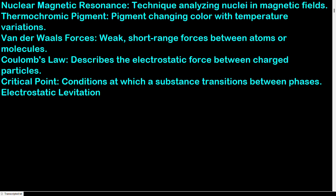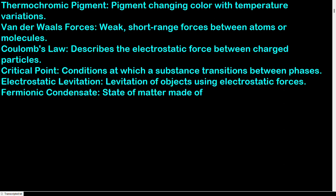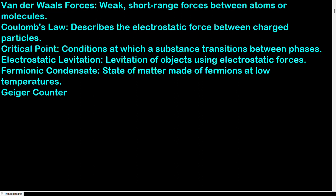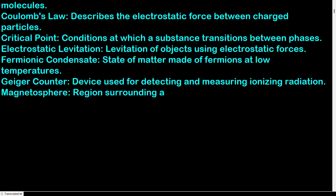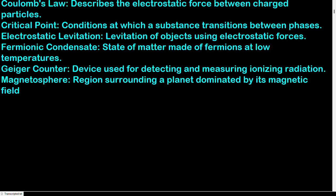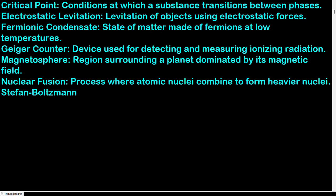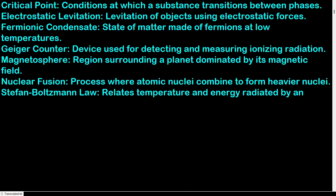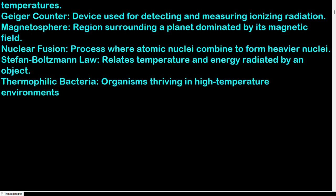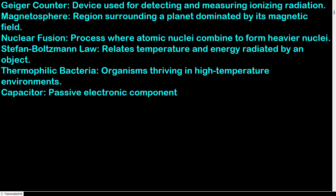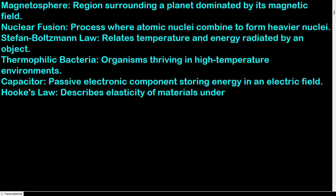Electrostatic levitation: levitation of objects using electrostatic forces. Fermionic condensate: state of matter made of fermions at low temperatures. Geiger counter: device used for detecting and measuring ionizing radiation. Magnetosphere: region surrounding a planet dominated by its magnetic field. Nuclear fusion: process where atomic nuclei combine to form heavier nuclei. Stefan-Boltzmann law: relates temperature and energy radiated by an object. Thermophilic bacteria: organisms thriving in high temperature environments. Capacitor: passive electronic component storing energy in an electric field. Hooke's law: describes elasticity of materials under tension or compression.